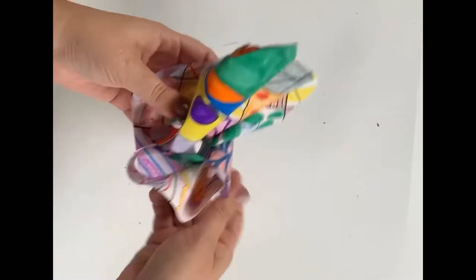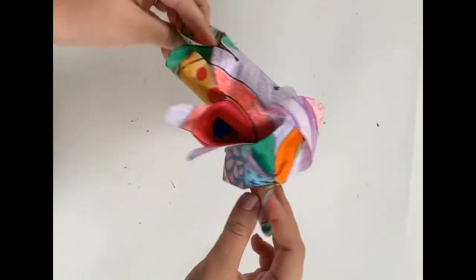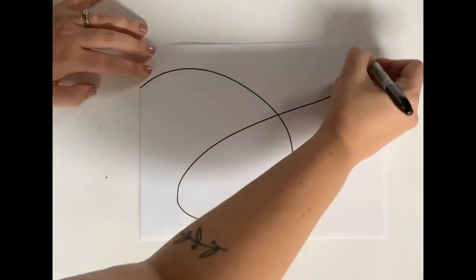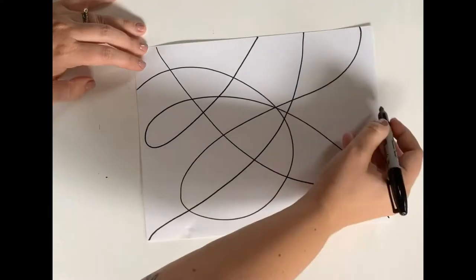Today we're going to be making a paper sculpture inspired by the artist Frank Stella. We'll start by using a marker to create free-form lines across our paper.